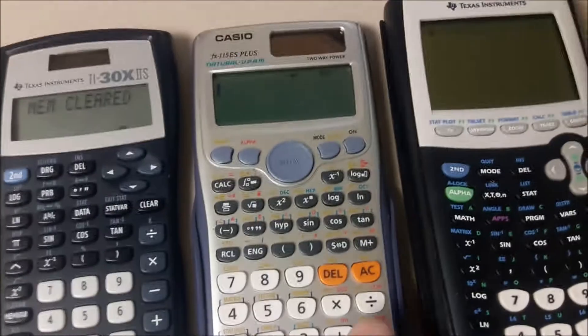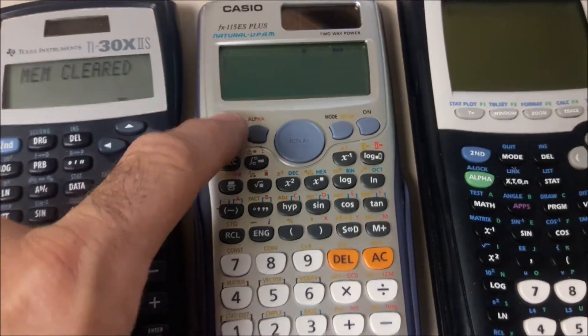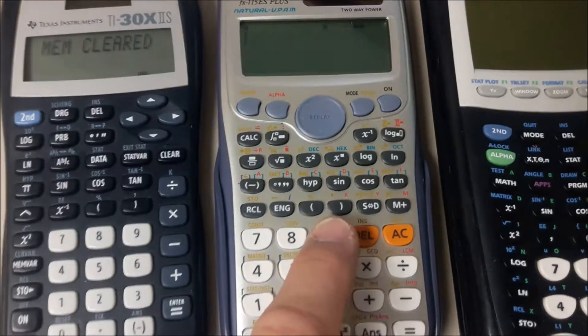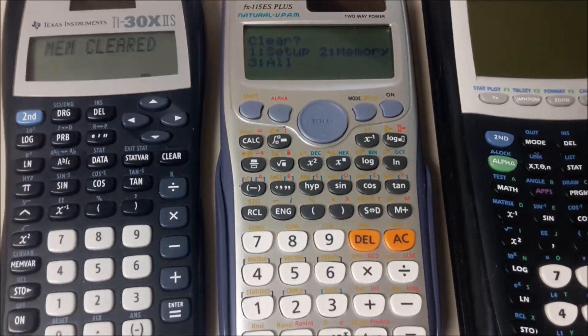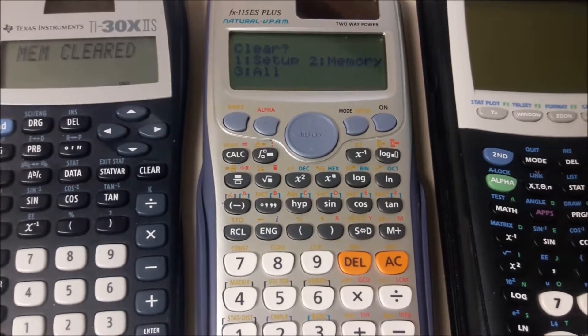On the Casio, it's a little different. This one's going to be Shift-9 and then it's going to give you some options there. We're going to go ahead and select 3.